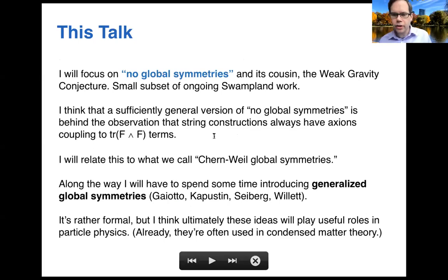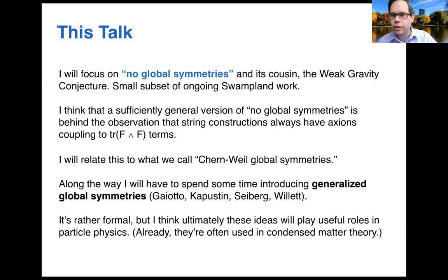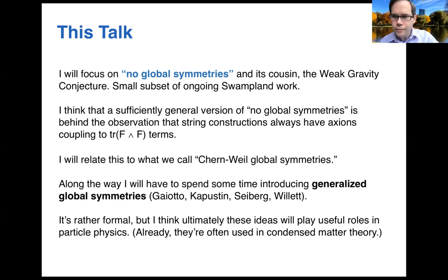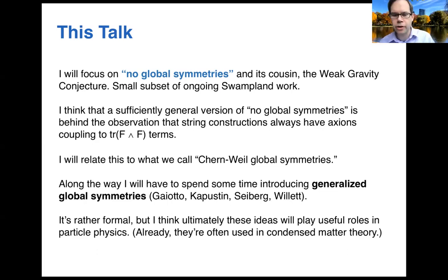In this talk I'm going to focus on one small part of this broader Swampland picture: the idea that there are no global symmetries in theories of quantum gravity, and the weak gravity conjecture as a sharper version of that statement. Toward the end I'll tell you about ongoing work where we think some version of this idea — no global symmetries — might be at the root of the observation that string constructions always have axions, related to what we call Chern-Weil global symmetries. I also need to spend time introducing generalized global symmetries from Gaiotto, Kapustin, Seiberg, and Willett, which are already used by condensed matter theorists to discuss topological phases of matter.